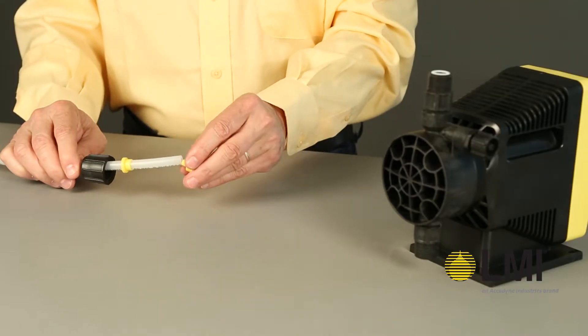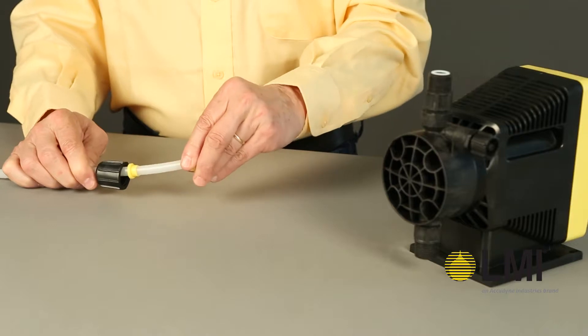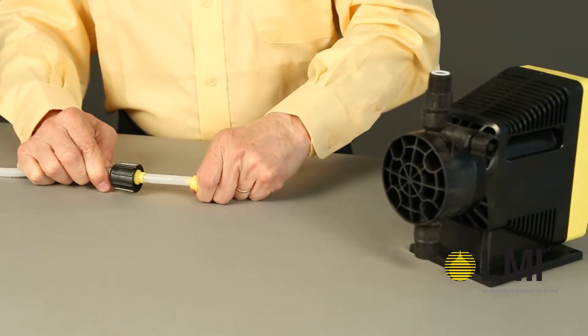Next, insert the male ferrule onto the end of the tube, pushing the tube into the bottom groove of the male ferrule.